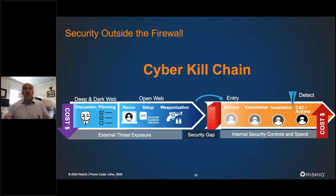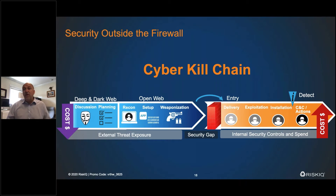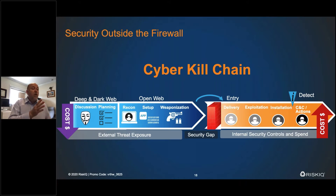When you think about your organization, most of the money is spent inside where you have control. Where we focus is everything outside the firewall. With everyone now being remote, it's more important than ever to figure out what you have, where people are, and if they're secure. We can usually find things one to four days before they're active — stopping threats earlier in the kill chain to reduce costs, exposure, vulnerability, and data leakage.